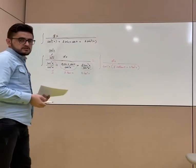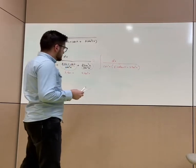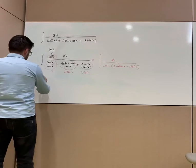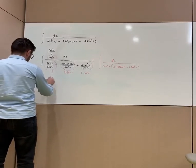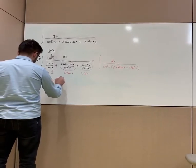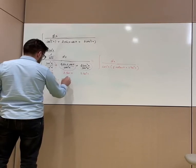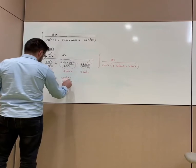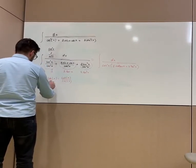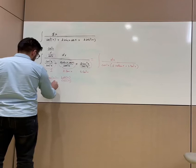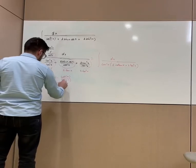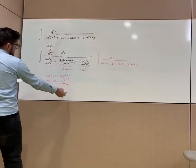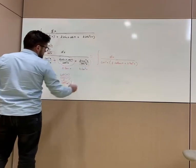Now I want to use two base formulas from trigonometry. The first one is cosine x equals 2 tangent x over cosine x, and the second one is tangent x equals 1 over cotangent x. Let's apply these formulas to this integral.